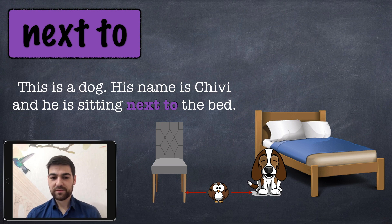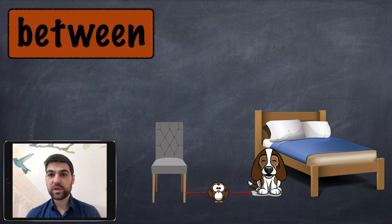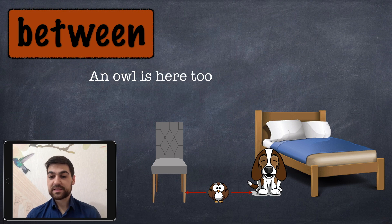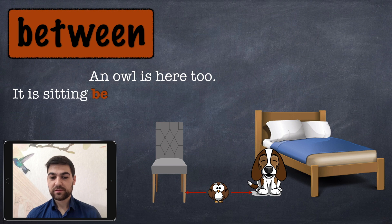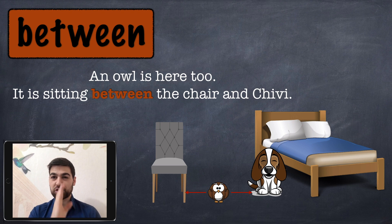The next word is 'between.' There is an owl in the picture too, and the owl is sitting between the chair and Chivy — right in the middle, between.